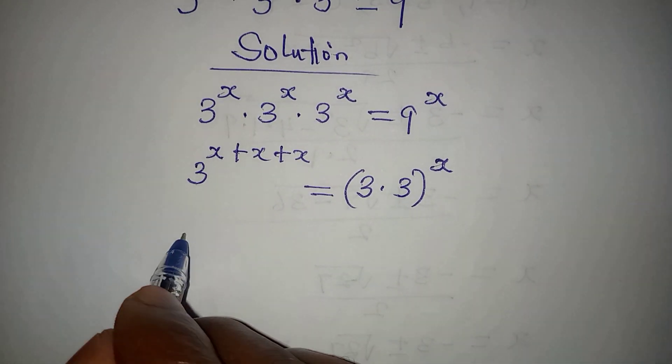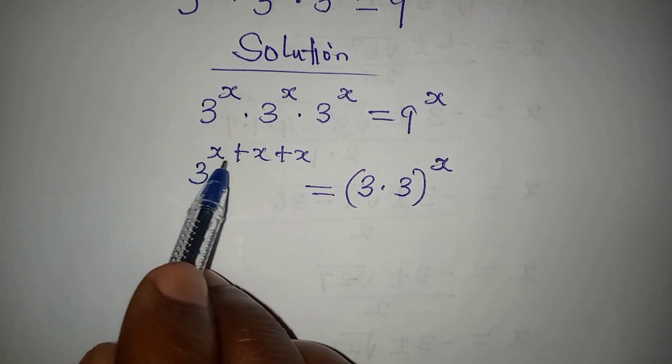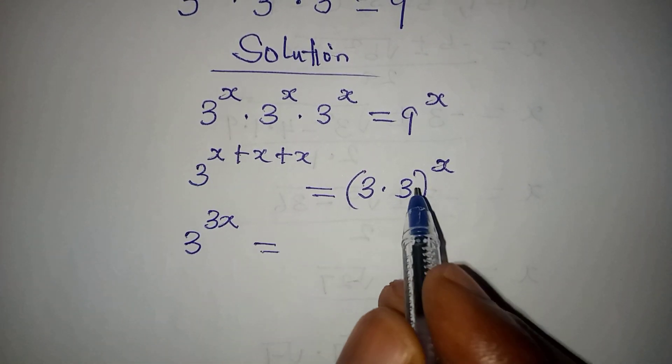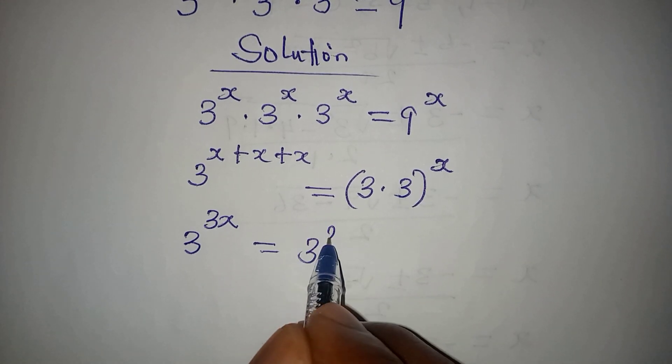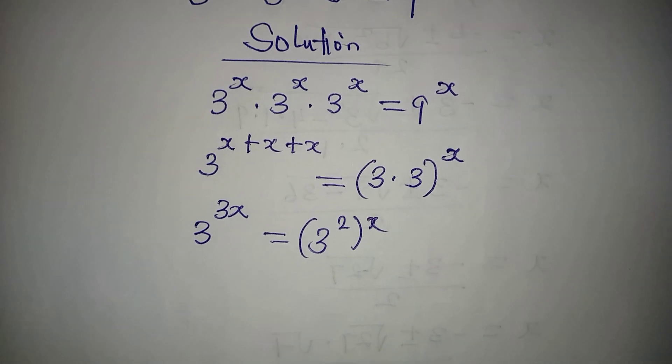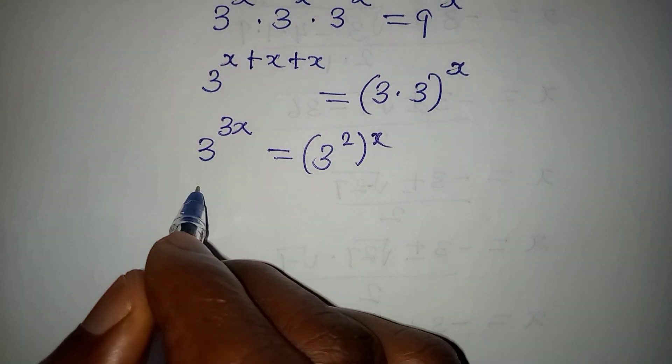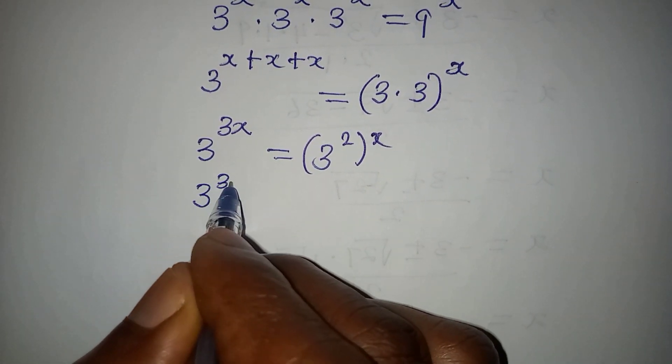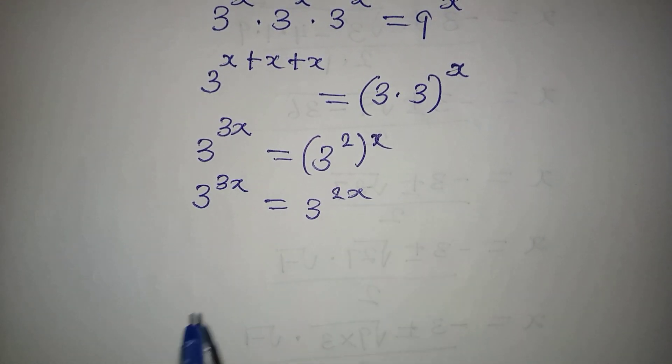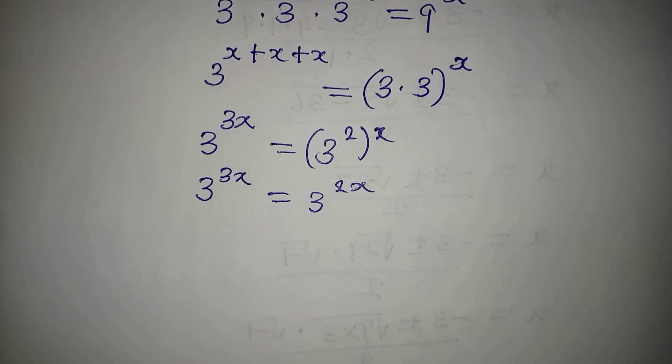Now 3 to the power of x plus x plus x gives 3x, and that equals 3 times 3, which is 3 squared, to the power of x. From here, 3 to the power of 3x equals 3 to the power of 2x.